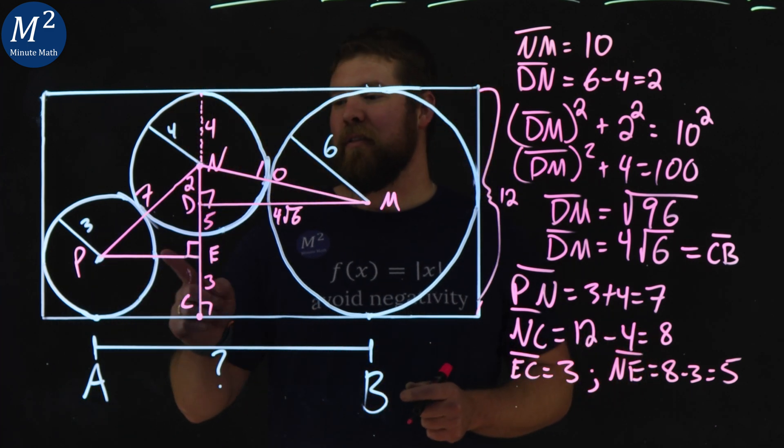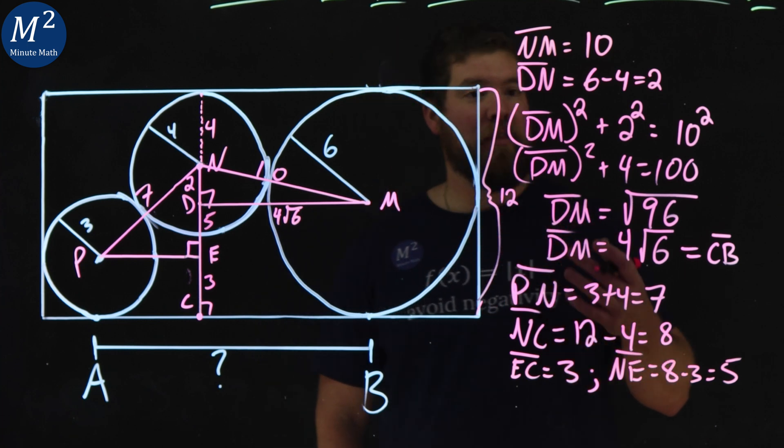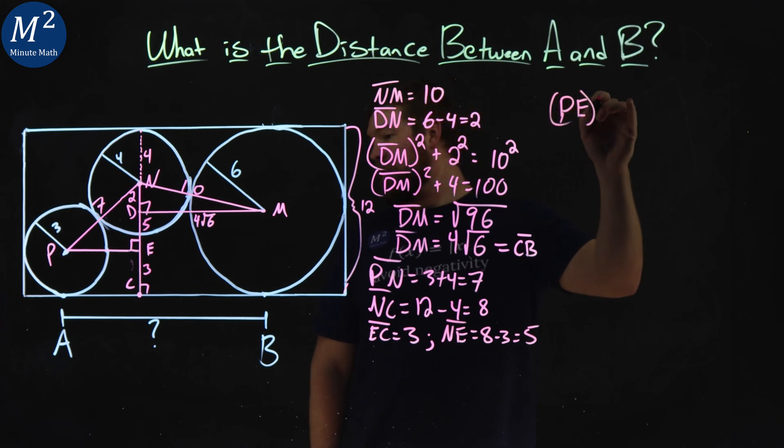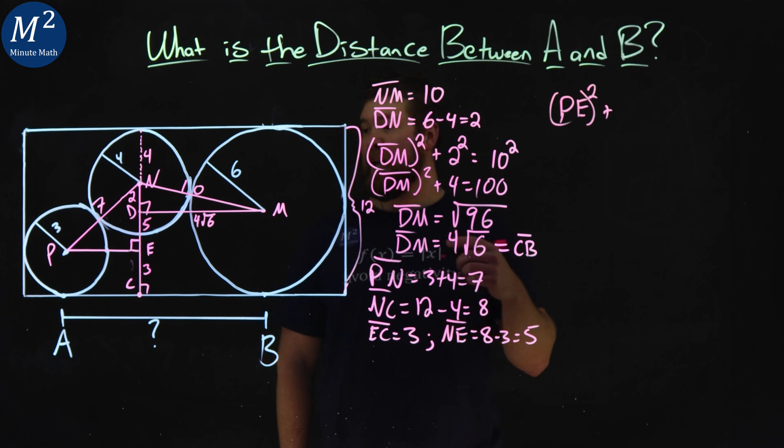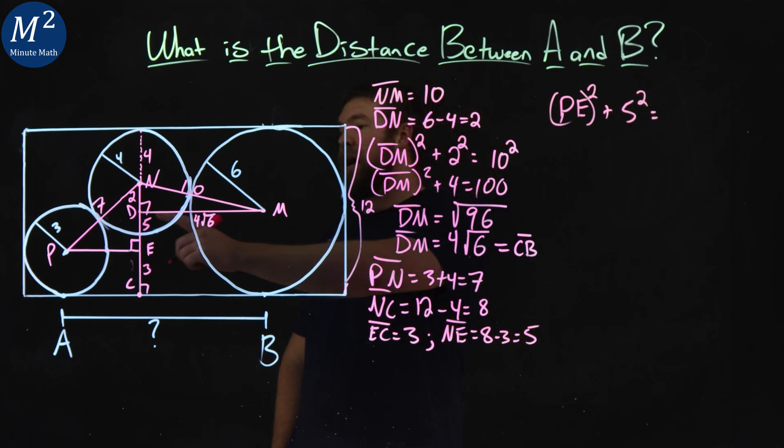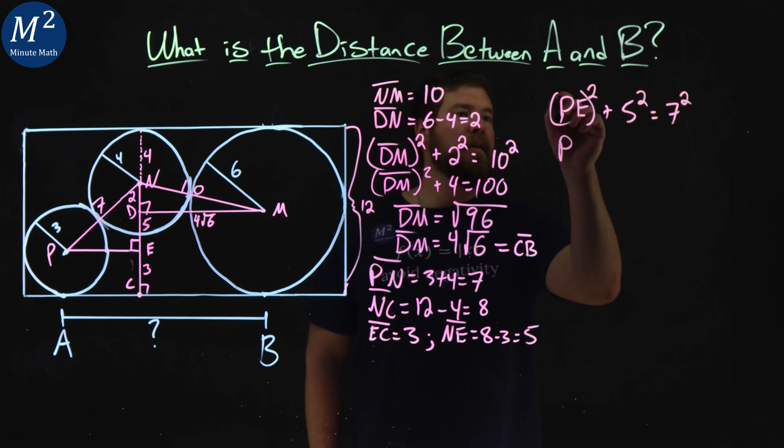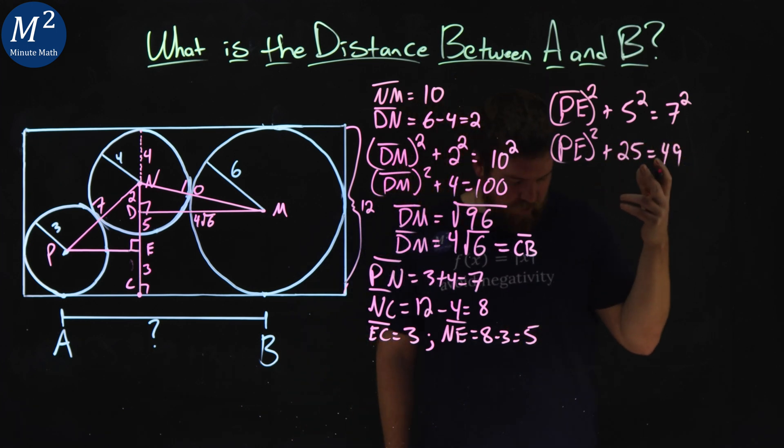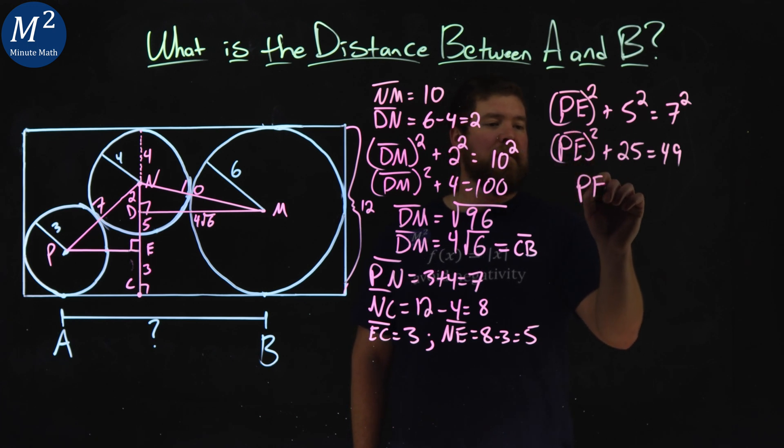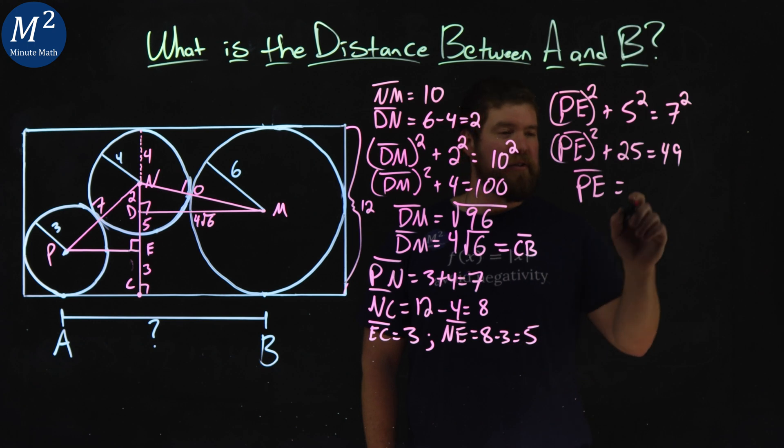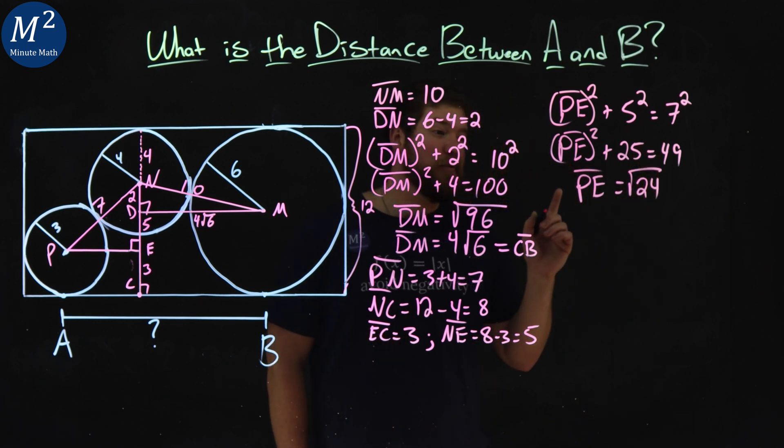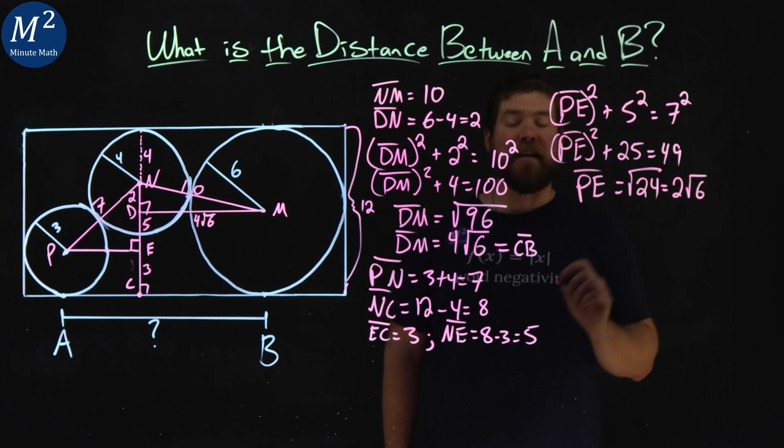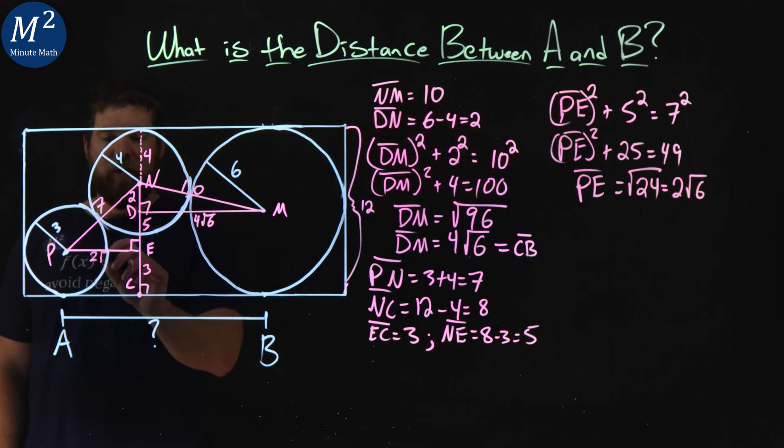And now we need to find the third length of that triangle. Again, Pythagoras helps us out here. So we have PE all squared, plus the length of 5 of NE, 5 squared, is equal to our hypotenuse, which we found to be 7 squared. Simplify this: PE all squared plus 25 equals 49. We subtract the 25 to both sides, and we have PE is equal to 49 minus 25, which is 24. Taking the square root of both sides, PE equals the square root of 24, which simplifies to be 2 square root of 6. So now we have the length of PE, which is 2√6.